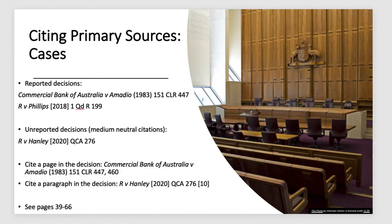Moving on to cases — they are quite complicated in terms of how they are cited. Cases are usually cited by reference to the parties' names involved in the dispute. You can generally locate a case on databases like Westlaw and LexisAdvance using the parties' names, but we still need to provide citation information for other means of locating cases. When discussing cases, the 'v' — as in Commercial Bank of Australia v Armadio — is pronounced 'and' in civil cases. In criminal matters, the 'v' is pronounced 'against', and 'R' is pronounced 'Crown', so R v Phillips is said as 'Crown against Phillips.'